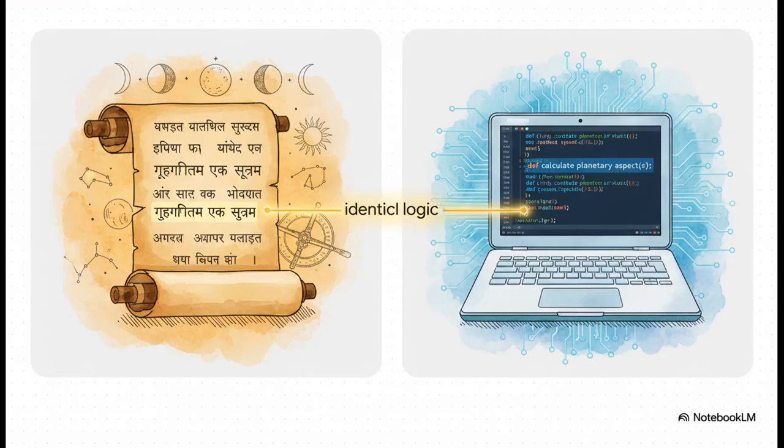Just look at this. Seriously. On the left, that's a verse from the Hora Shastra, a set of rules for a calculation. And on the right, that's modern Python computer code. And here's the kicker. They're doing the exact same thing. The logic is identical.